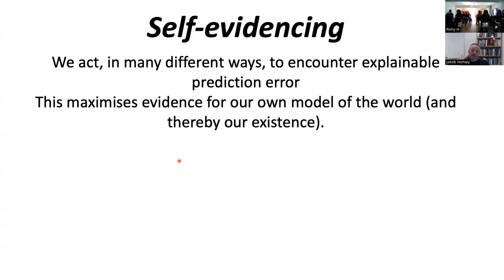There are many factors that play into picking a particular explanation and considering its evidence beyond just a prediction and a prediction error. This gives more resources to play with, and there's a nice overlap with concepts from autopoiesis and self-organization. Self-evidencing means we act in many ways to encounter explainable prediction error — seeking out things that will update our beliefs strongly, much like a scientist conducting a controlled experiment to maximize information gain between two hypotheses.